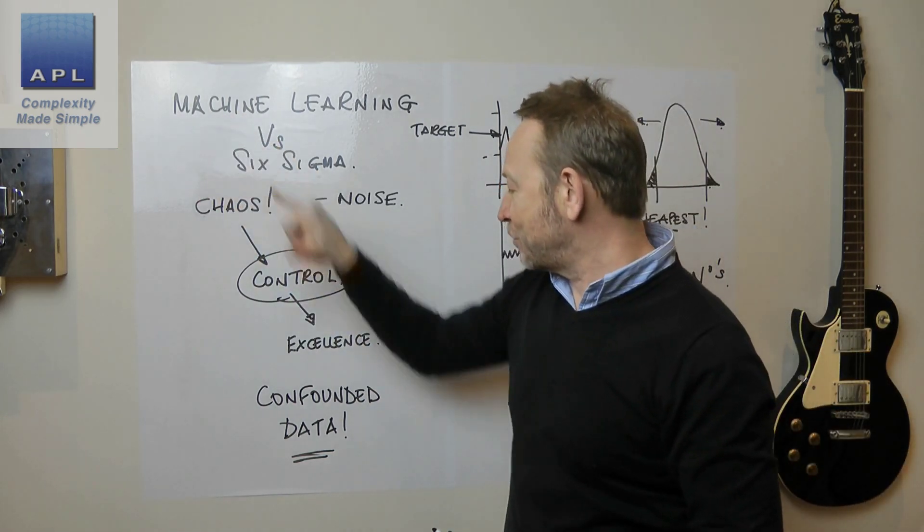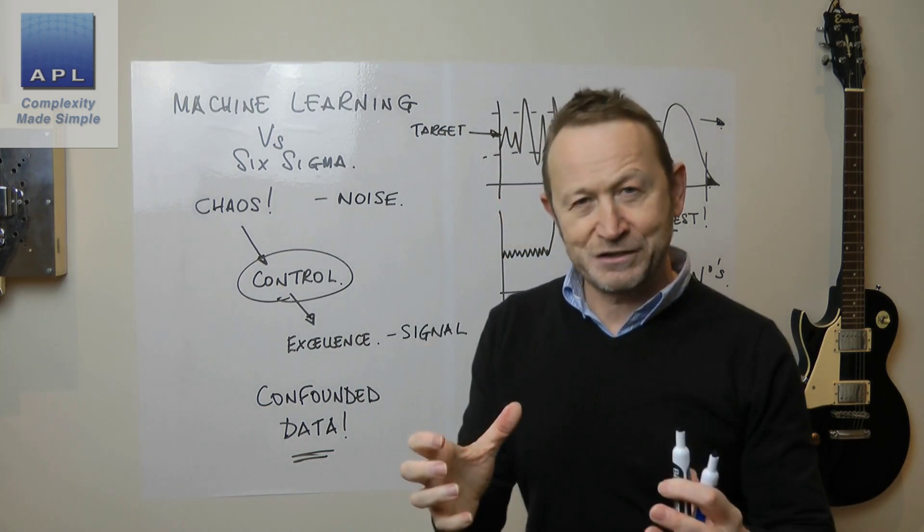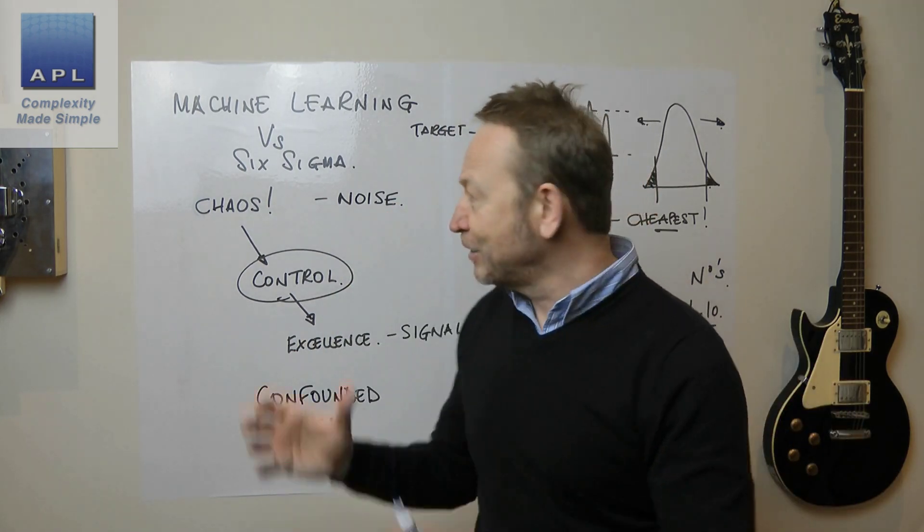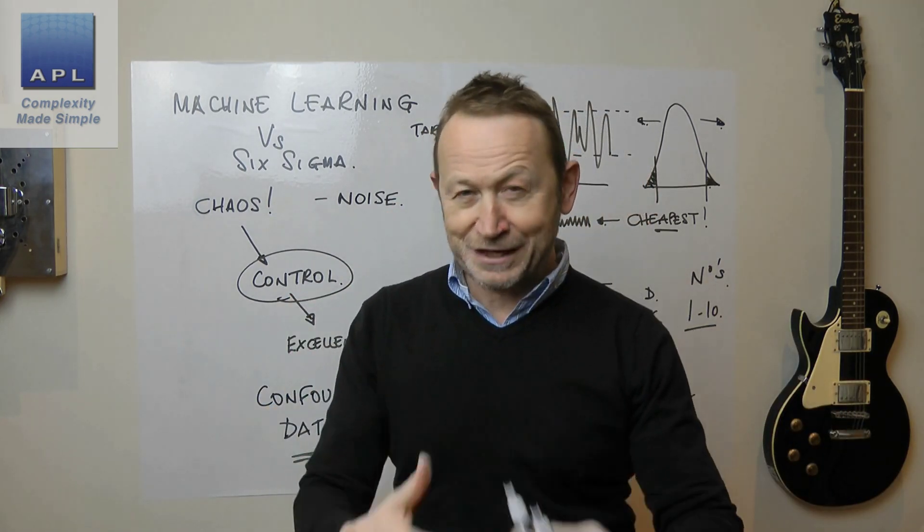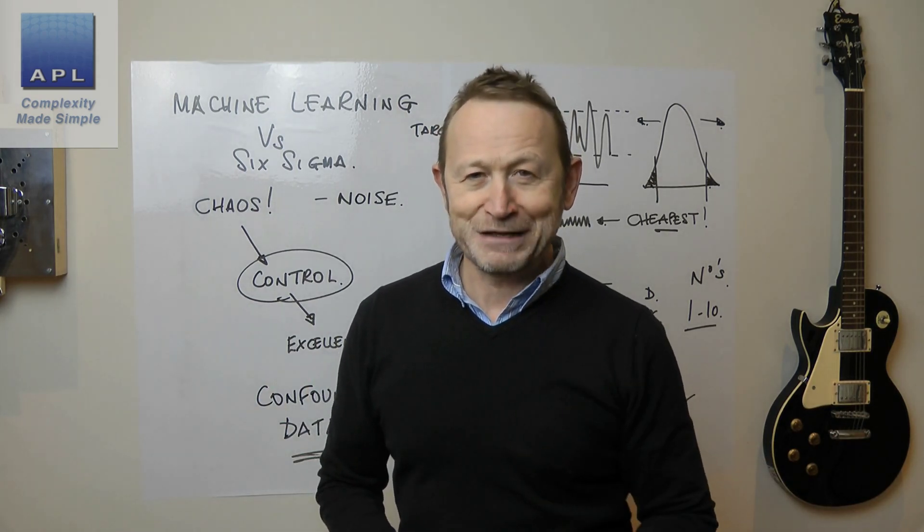Can it get wisdom? And then the other thing I would say is, can it get true knowledge when it's generating confounded data? So, AI and Six Sigma, do they fit together? Well, maybe they will in the future when we develop the process even better.